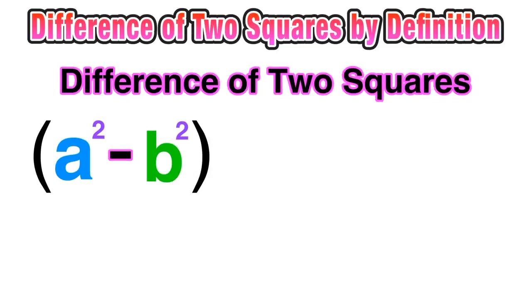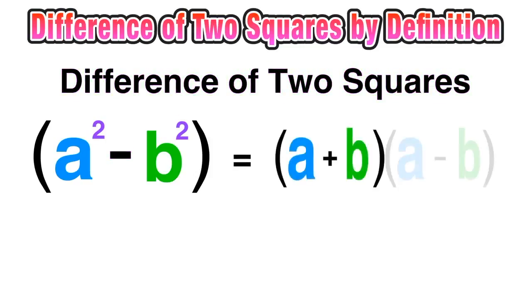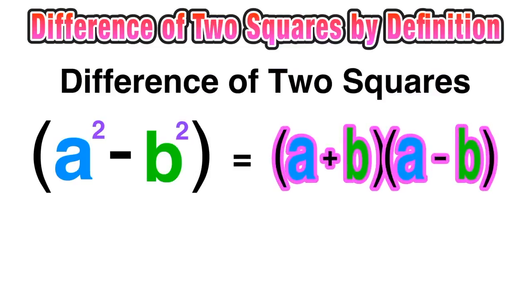So by definition, when you have a binomial of the form a squared minus b squared, you can factor it as a plus b times a minus b.